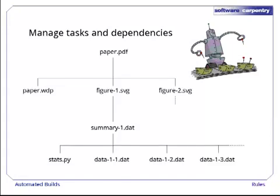For the paper the robot is working on, paper.pdf depends on paper.wdp, figure1.svg, and figure2.svg, while figure1.svg depends on summary1.dat, which in turn depends on all the files with names like data11.dat, data12.dat, and so on.